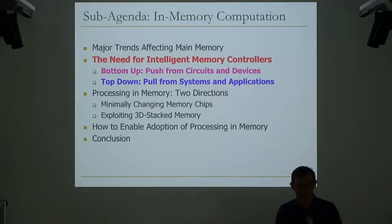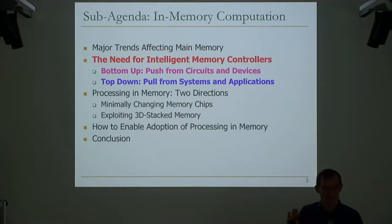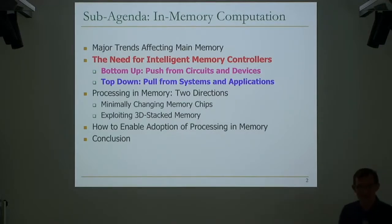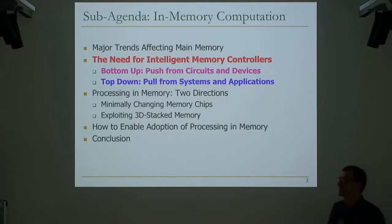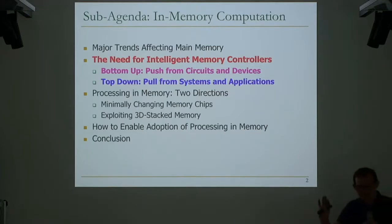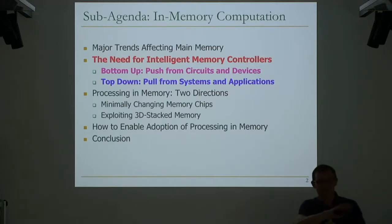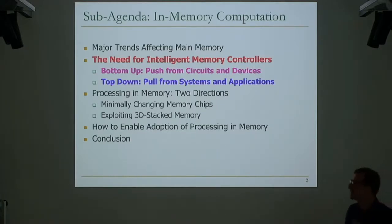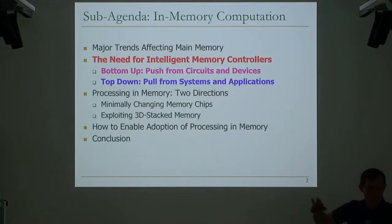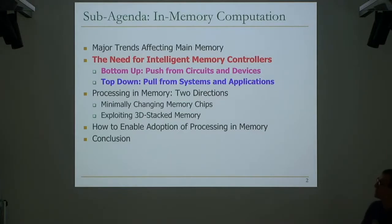Harold Stone was at IBM Research for a long time and has a computer architecture textbook. But processing-in-memory never took off. Papers were written in the 70s and 80s — database systems wanted it because things were slow. In the 90s, there was Intelligent RAM and Flex RAM. The 2000s were calm, and then more recently it started gaining attention again. Even though people built chips, they were never commercialized.